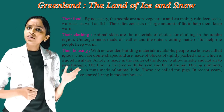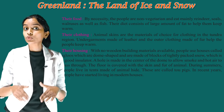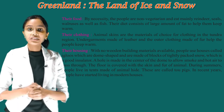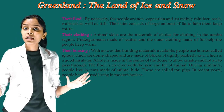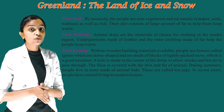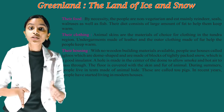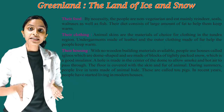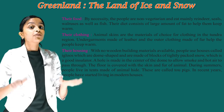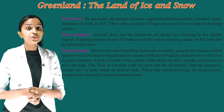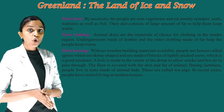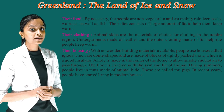Animal skins are the material of choice for clothing in the Tundra region. Undergarments made of leather and the outer clothing made of fur help the people keep warm. With no wooden building material available, people use houses called igloos, which are dome shaped and are made of blocks of tightly packed snow, which is a good insulator. A hole is made in the centre of the dome to allow smoke and hot air to pass through. The floor is covered with the skin and fur of animals. During summers, people live in tents made of animal hide, called tepees. In recent years, people have started living in modern houses.